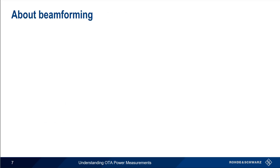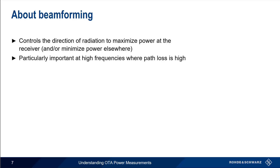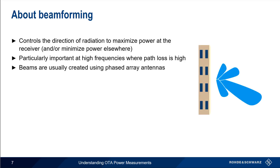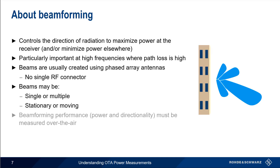Now let's talk about the more specific case of beamforming. Beamforming involves controlling the direction of radiation in order to maximize the power at the receiver and/or minimize power in other locations. The ability to direct or concentrate transmit power in one direction is particularly important at high frequencies, where path loss and attenuation are also quite high. Beams are usually created using phased array antennas that consist of multiple elements, meaning there is no single RF connector between transmitter and antenna. Note that beamforming may be used to create more than one beam, and a beam may be stationary or may move, often in response to the ambient RF environment. The only way to accurately quantify beamforming — both magnitude and direction — is using over-the-air power measurements.